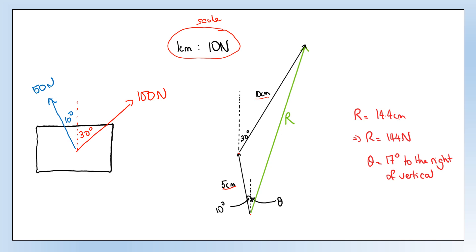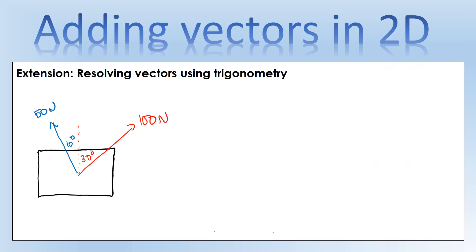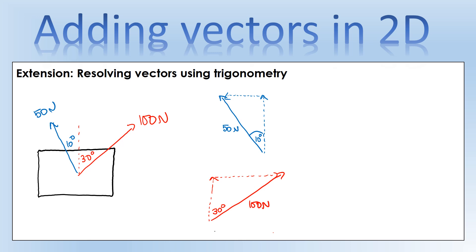Some of you might be asking: is there a better way of adding vectors? There is, but it's beyond the course. The technique is called resolving - essentially the opposite of what I've been showing. We take each of the two force vectors and split them into two components, producing four vectors that have the same effect as the original two. The 50 newton force splits into a vertical component and a horizontal component to the left; the 100 newton force splits into a vertical component and a horizontal component to the right.